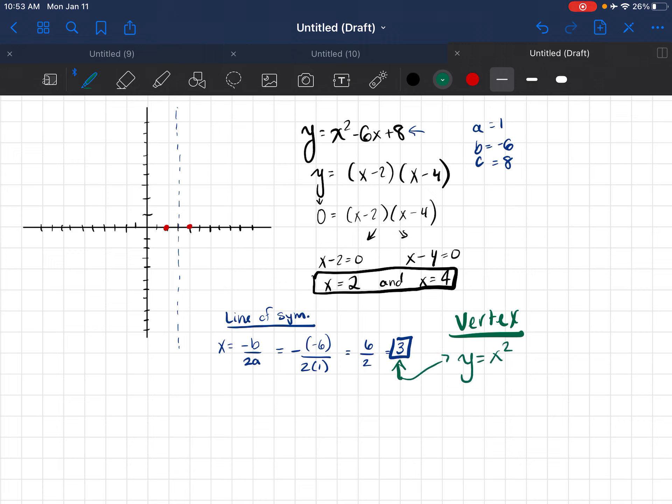So y equals x squared minus 6x plus 8. Now if I substitute this value of x from the line of symmetry, I will find the corresponding y point. So y equals 3 squared minus 6 times 3 plus 8. Y equals 9 minus 18 plus 8. Y equals negative 9 plus 8.